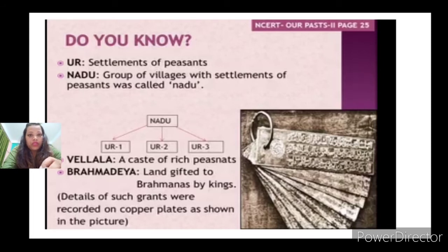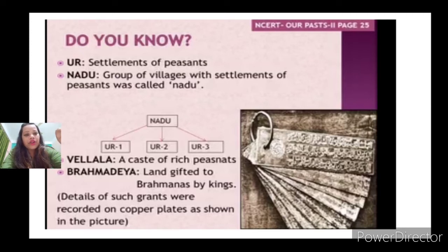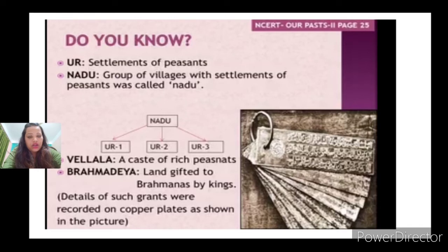Before moving to the next topic on administration, you must learn a few important definitions. 'Ur' is known as a settlement of peasants — a group of peasants is known as 'ur.' 'Naru' refers to a group of villages with settlements of peasants — it is like an assembly or association. There are various communities of peasants, and all these communities together are known as 'naru.' I have shown pictures of ur-1, ur-2, ur-3, and together they form a naru.